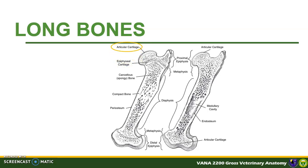Articular cartilage is a thin layer of hyaline cartilage that covers the articular joint surface of a bone. The periosteum is a fibrous membrane that covers the surface of a bone, except where articular cartilage is located.